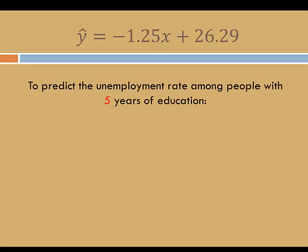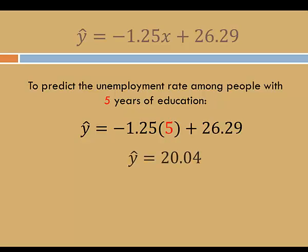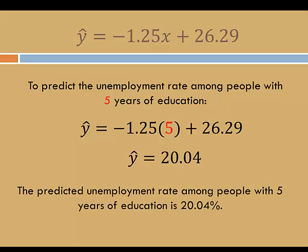For example, to predict the unemployment rate among people with 5 years of education, we'll replace x by 5. When we multiply 5 by negative 1.25 and then add 26.29, we get y-hat equals 20.04. So the predicted unemployment rate among people with 5 years of education is 20.04%.